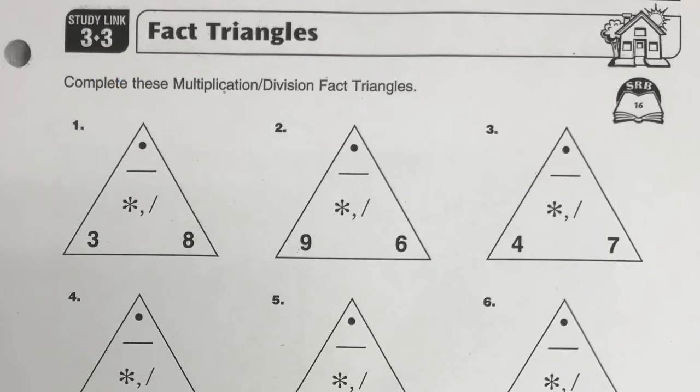And this is something we've seen before, so it's pretty simple. For the fact triangle, your two factors are here, and then the product goes up at the top.